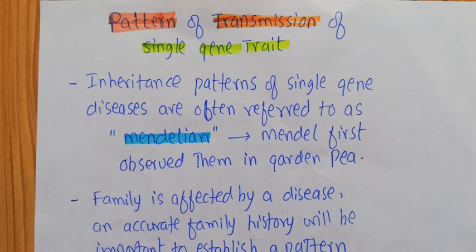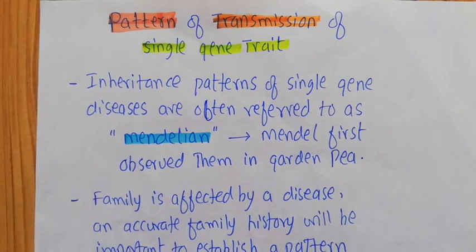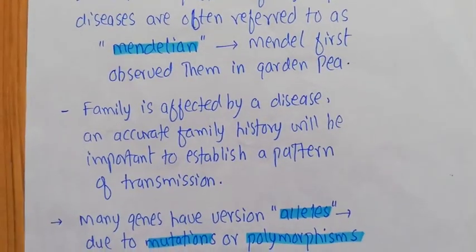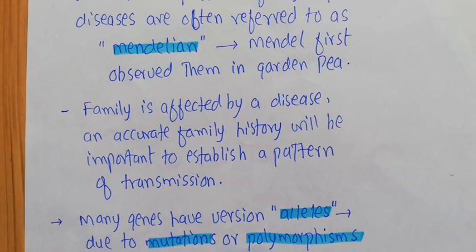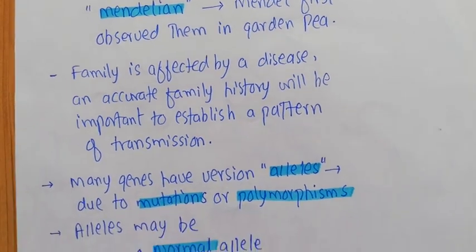I have detailed videos on Mendel and I'll share the link in the description. When you talk about human beings and you want to establish a pattern of transmission of a single gene, you have to make sure that the family affected by that particular single gene trait has an accurate family history. You need to make pedigrees and that sort of analysis, which we'll be discussing in coming videos, to declare that a particular transmission pattern is controlled by single genes.